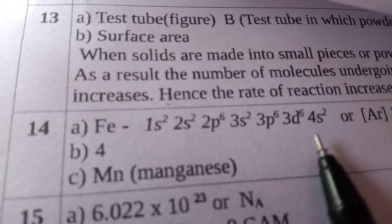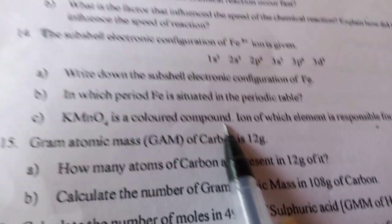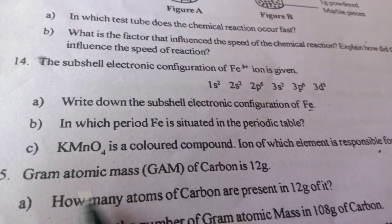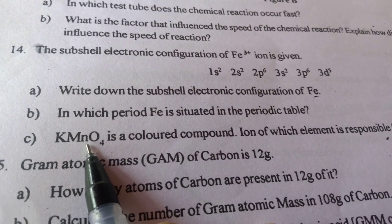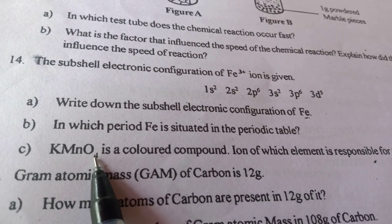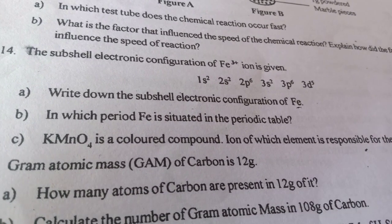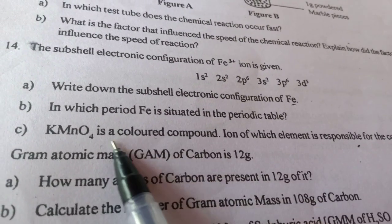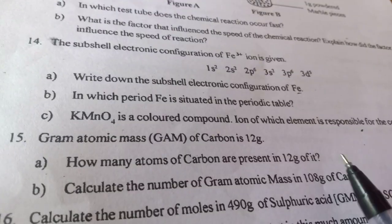Next one, KMnO4 is a colored compound. Ion of which element is responsible for the color? That is manganese, that is Mn. These are the D block elements. D block element's specialty is there will be colored compounds, that is the specialty of D block elements. Manganese has this coloring property.